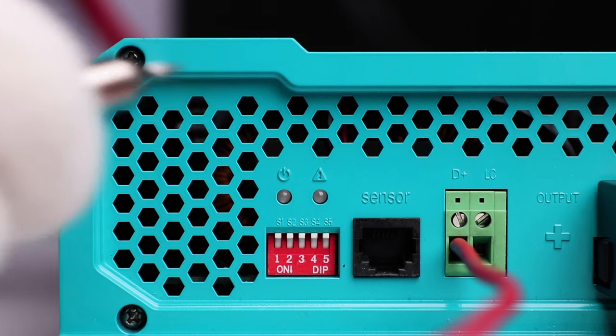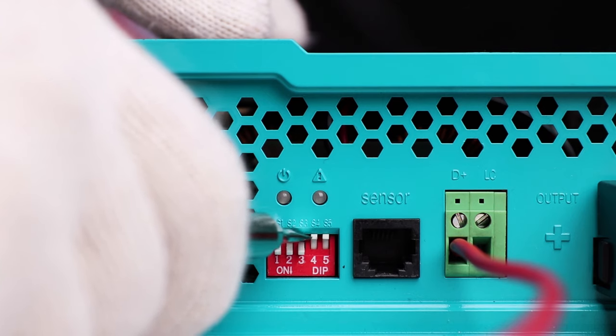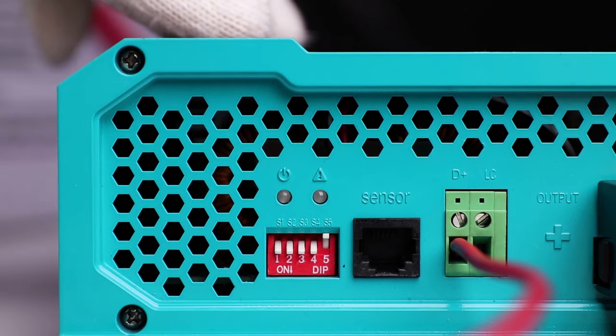For today's demonstration, we are using our 12-volt 100 amp hour lithium iron phosphate battery, so we will be choosing the corresponding lithium setting.